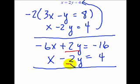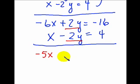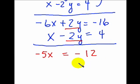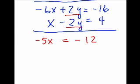Notice now if we add the two equations together, we are going to get 0 out of the two y terms. Thus we have eliminated the y variable. So we end up with negative 5x is equal to negative 12. Now we have one equation and one unknown, and we thus have the ability to solve for x.